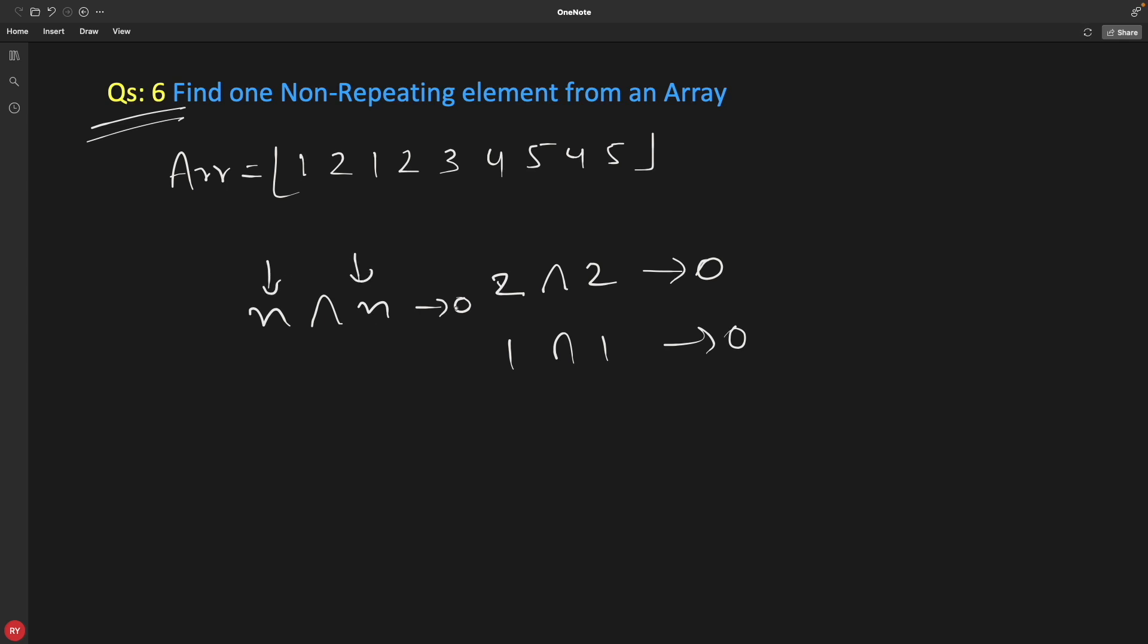The point is you XOR 1 with 1, 2 with 2, 4 with 4, 5 with 5. So the result of all these would be 0, and ultimately you will get 3 as an output. Now you might be thinking, how would I find one? I want to XOR this one with this. This one can be here, here, here, here.